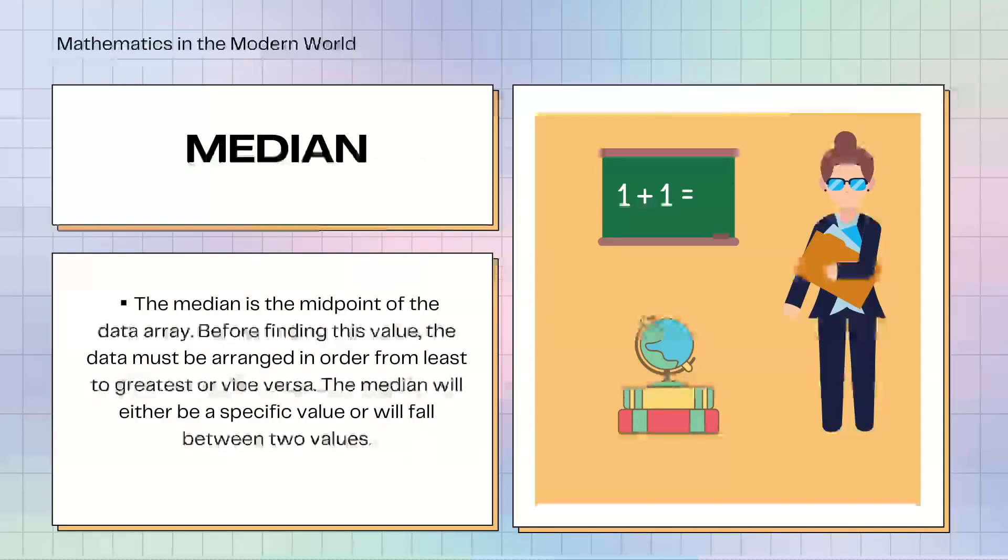Median. The median is the midpoint of the data array. Before finding this value, the data must be arranged in order from least to greatest or vice versa. The median will either be a specific value or will fall between two values.